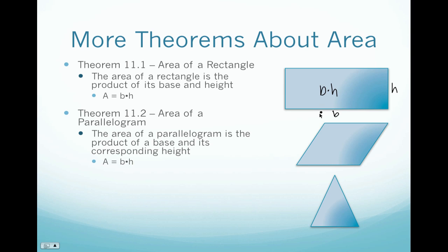The next figure is a parallelogram. It has the same formula as a rectangle — base times height — but we have to figure out the height of a parallelogram. In order to find the height of any polygon, you have to draw its altitude. So if we draw a segment straight down, forming a right angle with its base, that perpendicular segment is the height of the parallelogram, not the length of its side.